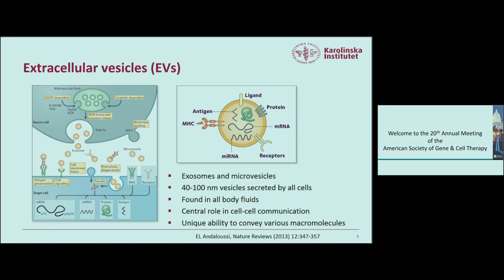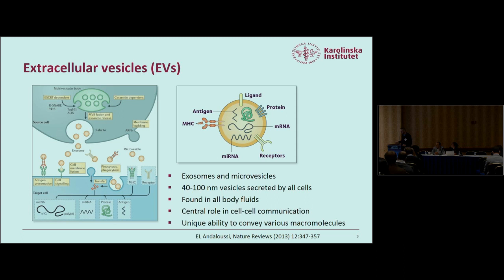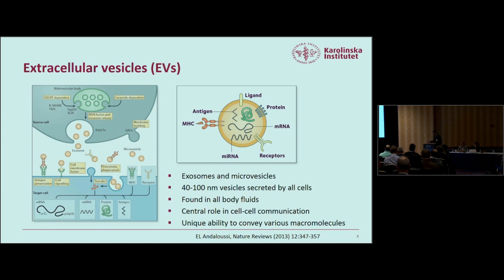When we speak about EVs, we typically talk about two types: microvesicles, which bud from the membrane, and exosomes, which are secreted through the MVB pathway. The distinction was once clear, but we now know there is great overlap between these two vesicle types, so we jointly name them EVs. They can act in recipient cells by presenting antigens, inducing cell signaling, membrane fusion to transfer genetic cargo such as RNA or microRNA, and through receptor-ligand interactions.